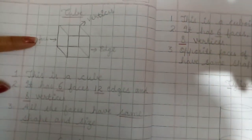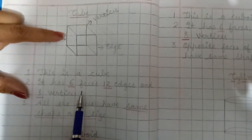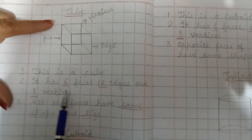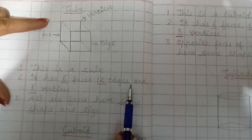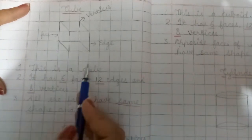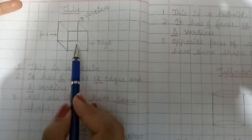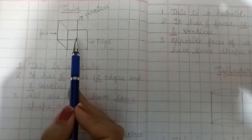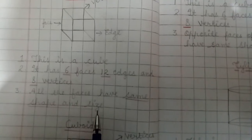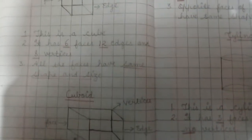This is the picture of a cube. You can see it has six faces and eight vertices — these are the vertices, and these are the faces. It also has 12 edges. So: edges are 12, faces are 6, and vertices are 8. All the faces have the same shape and size. When you turn a dice, you can see the same shape and size every time.